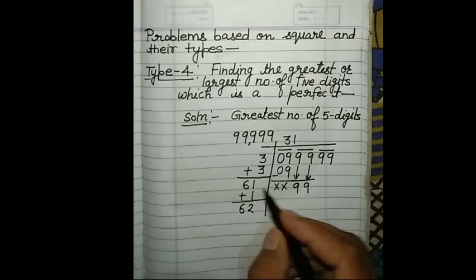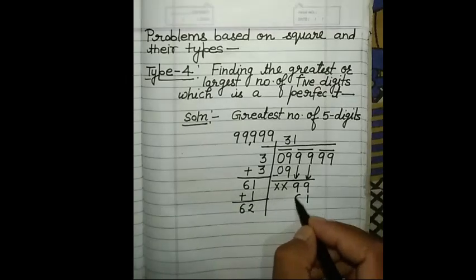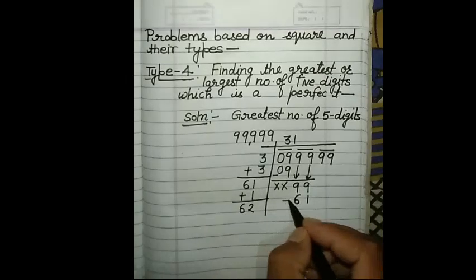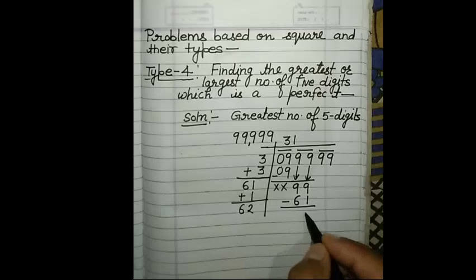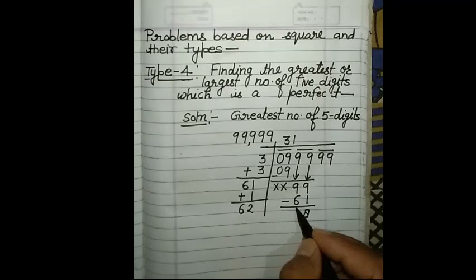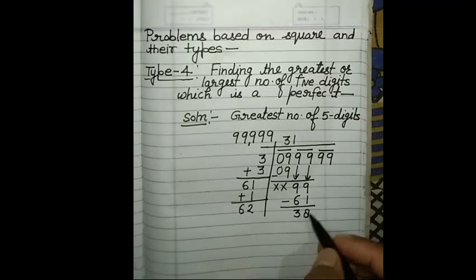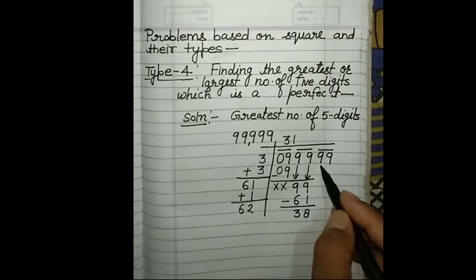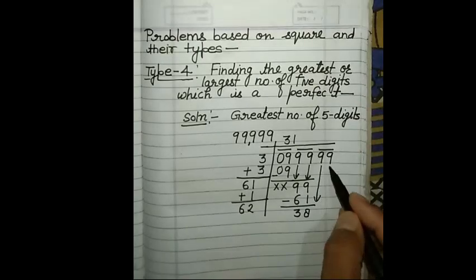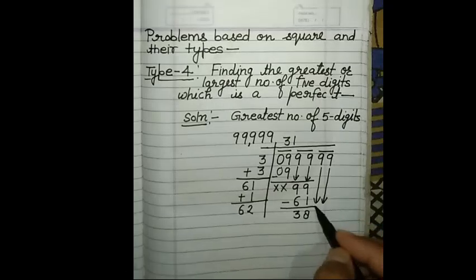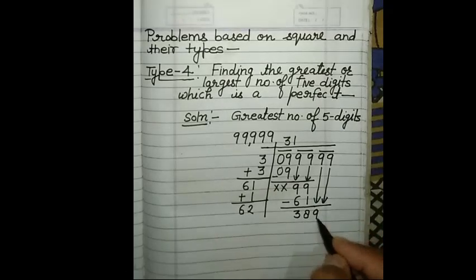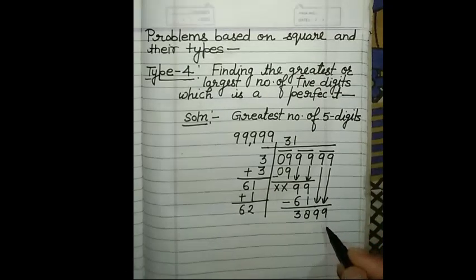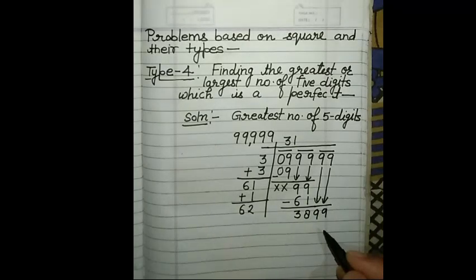Here we multiply: 1, 1, 6, 6. Minus: 9, 6, 8. The result is 9, 6, 3 — so 38. Now the next pair is 99, the last pair is 9. We bring it down, so this becomes 3,899.